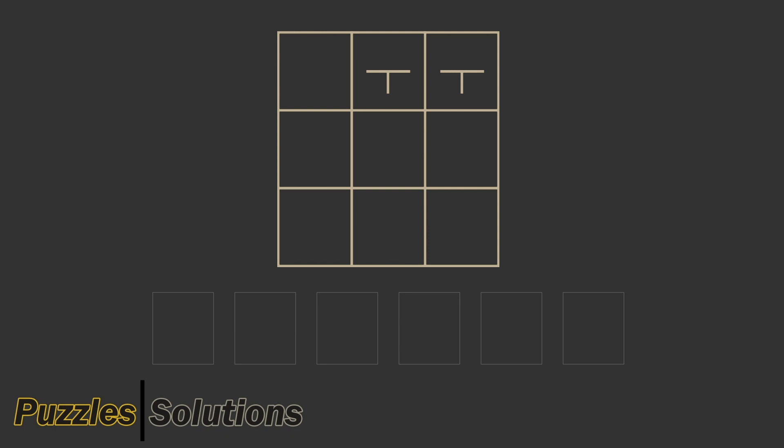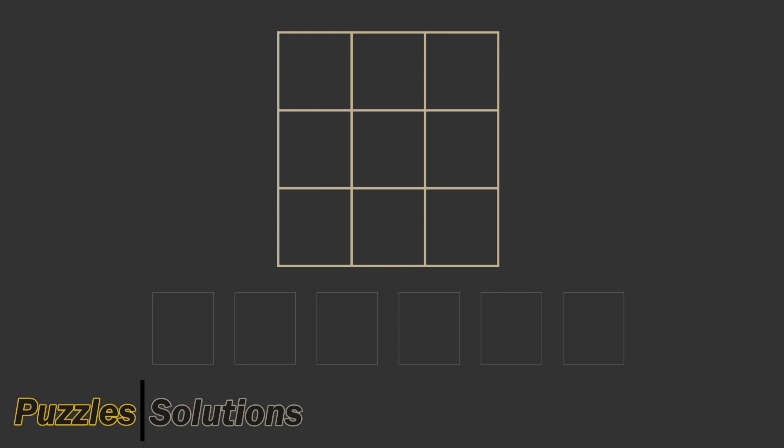The fifth type of repetition is repetition of color — for example, in the first row we might have red, red, red. The sixth and last type of repetition is repetition of a characteristic. For example, in the first row we might have shapes with three corners. So we don't repeat a specific shape, but we repeat the amount of corners.